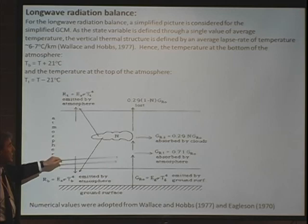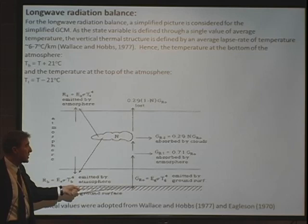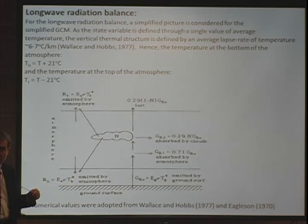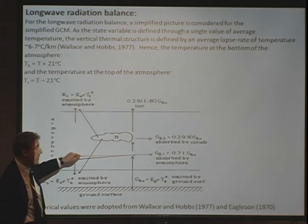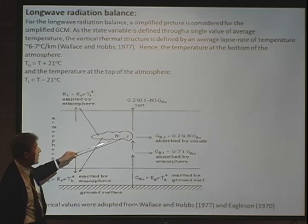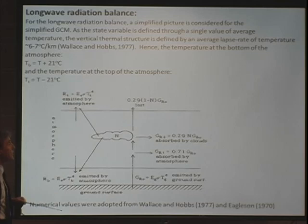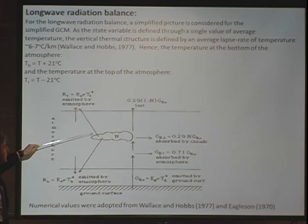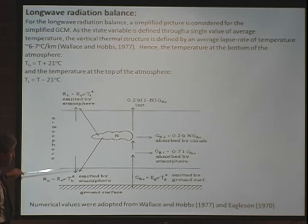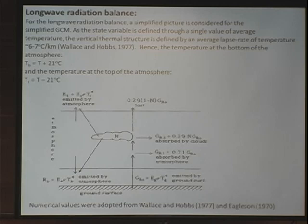Here we are looking at the long-wave radiation balance within the atmosphere — a very important energy balance. Long-wave radiation emitted by the ground surface is partly absorbed by the atmosphere, which depends on atmospheric chemistry including the greenhouse effect. Part is absorbed by clouds, and the rest is lost to space. Meanwhile, due to water vapor and other gases in the atmosphere, long-wave radiation is also emitted back to the ground as well as to space.